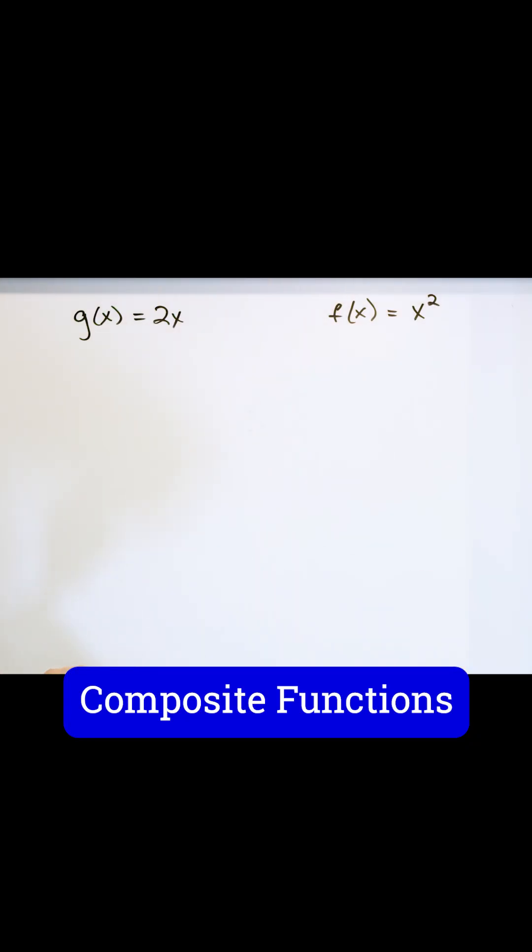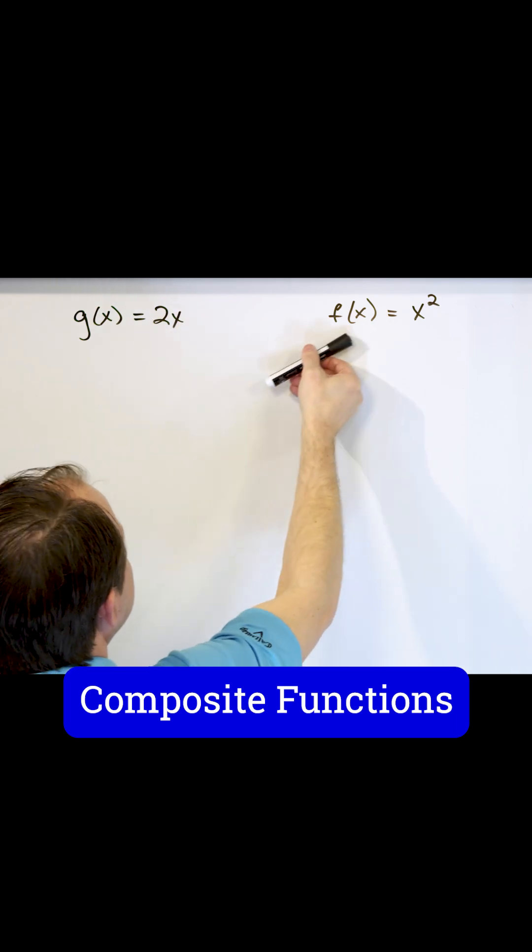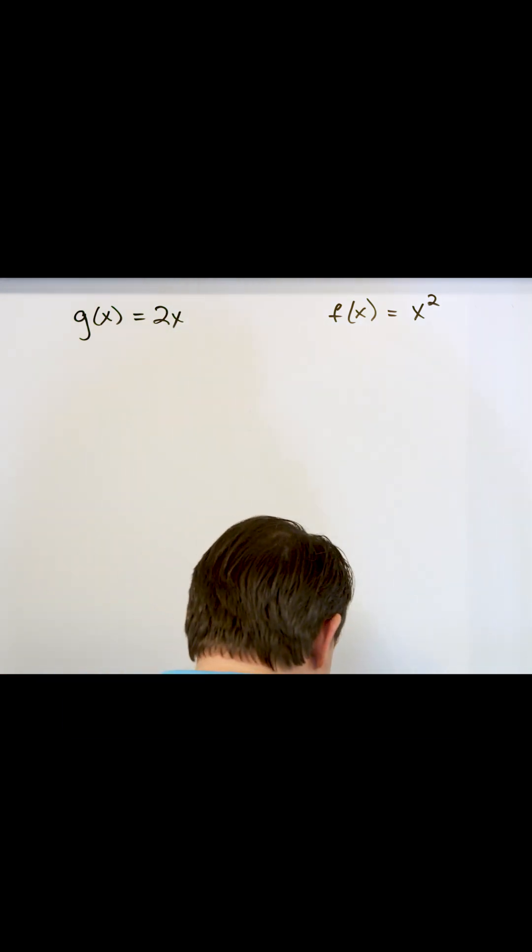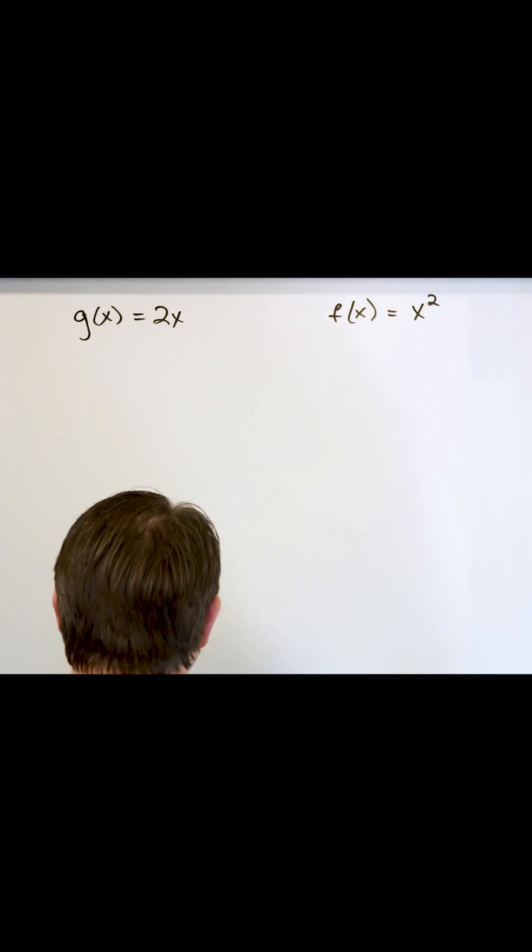Now what we're going to do is link these functions together. We're going to send an input into here, get an output, and we're going to send it right back into the other function and get the final output. And that process is called a composite function.